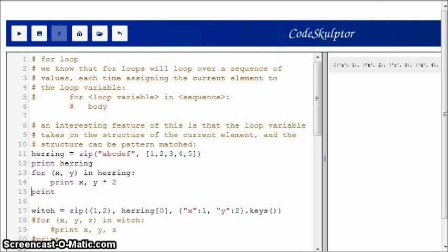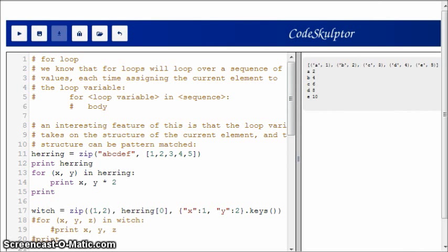What I'm going to do is loop over the values in herring. Herring is a list of tuples, so this matches the values in herring. Every value in herring is going to have this structure. Because of that, we can put this in place. For each value in herring, we're going to take the tuple, take the first value and store it in x, the second value and store it in y. When we print this, we'll see that we get the x value and then the y value multiplied by 2. Remember that in herring we have a1, b2, c3, d4, and e5. What we printed out was what we expected: a2, b4, c6, d8, and e10.